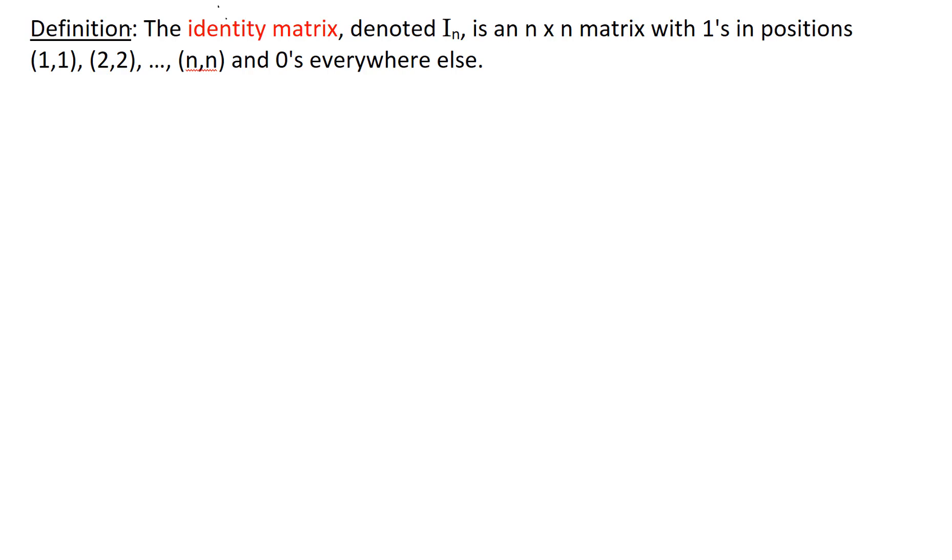The first is the identity matrix. The identity matrix, denoted I sub n, is an n by n matrix with 1s in positions 1,1, 2,2, all the way up through the nth row and nth column, and 0s everywhere else.